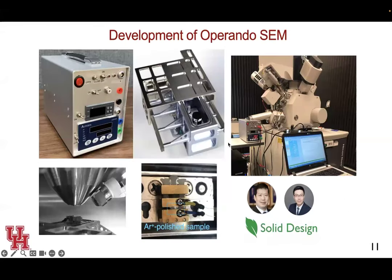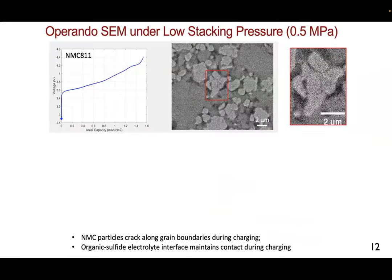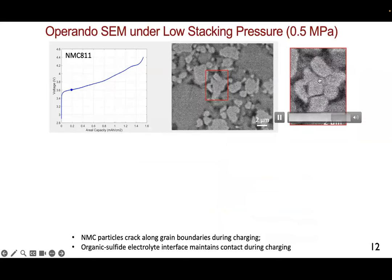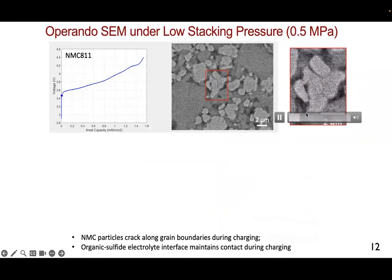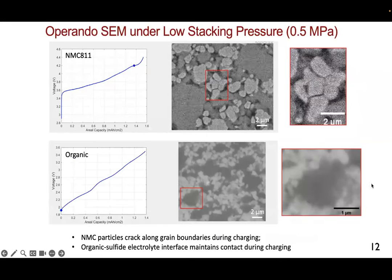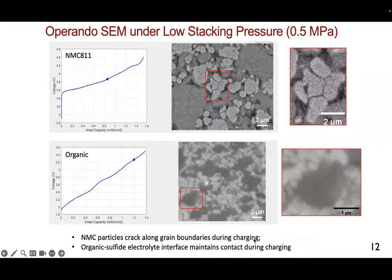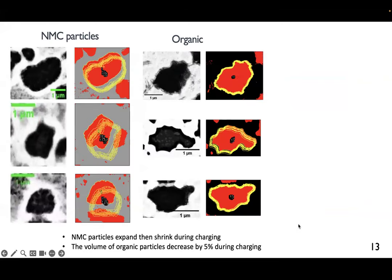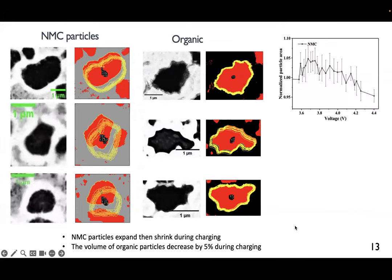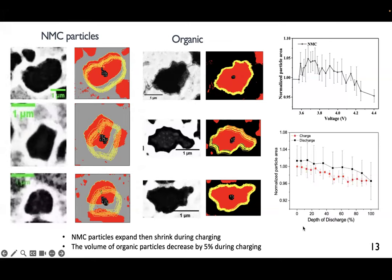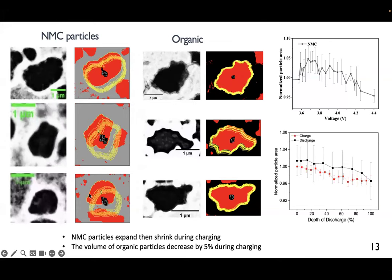Our group developed in-situ SEM to look at how particle volume evolves during charge-discharge. In the NMC system, cathode particles expand and form cracks at the interface during cycling. But for organic materials, we see almost no crack formation. We can track individual particles and compare organic and inorganic. The volume change turns out to be about 5% — similar in magnitude — but we don't see any cracking in the organic case.